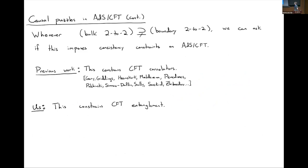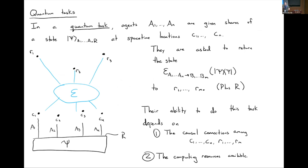Many authors have thought about how this constrains CFT correlators — arguing that bulk causal structure tells you something about CFT correlators that you can try to discuss purely from the boundary perspective. I'm not going to talk about that at all today. What I am going to tell you is that when you have this kind of bulk causal enrichment, you can use it to constrain CFT entanglement. To understand why this should be true, I need to tell you how to think about information processing in spacetime using a framework called a quantum task.